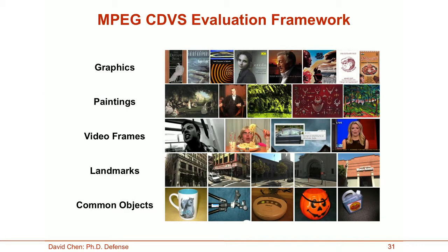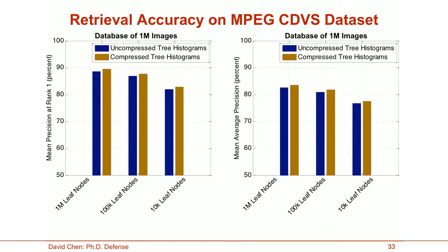To test the effectiveness of our methods, we use the MPEG-CDVS evaluation framework, where CDVS stands for Compact Descriptors for Visual Search. It is a standardization activity within MPEG for building low-bitrate descriptors with high matching performance. Within this dataset, there are five categories of images: graphics, paintings, video frames, landmarks, and common objects — about 10,000 images in total. To test large-scale retrieval performance, these images are embedded into a sea of one million distractor images. I'm showing the retrieval accuracy in terms of mean precision at rank 1 and mean average precision.